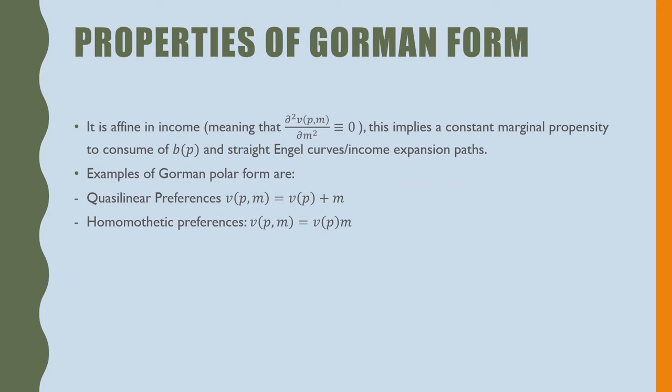Just some additional notes on Gorman Form. Gorman Form is affine in income, meaning that the second derivative of our indirect utility function with respect to income is equivalent to zero. This implies a constant marginal propensity to consume of B(p) and straight Engel curves and income expansion paths.